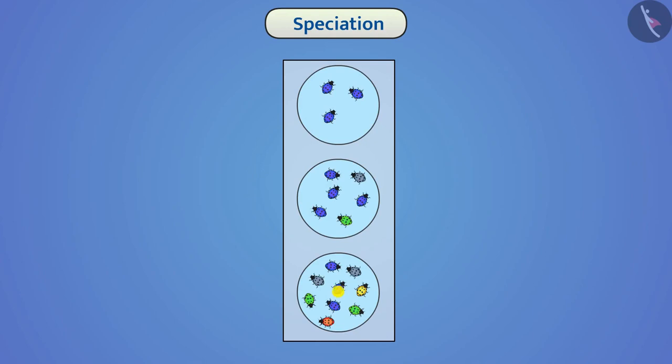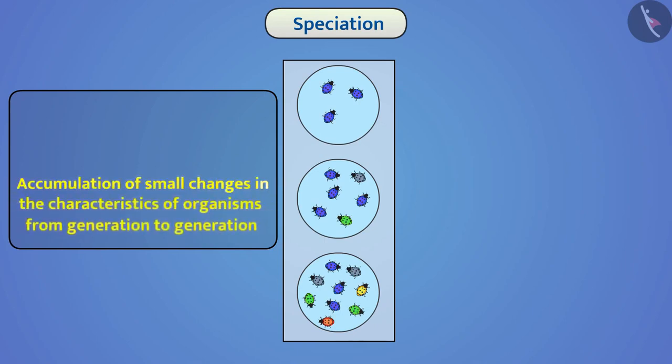Due to these variations, there are developments of certain characters in the organism which are different from that of parents. In this way, accumulation of small changes in the characteristics of organisms from generation to generation are called microevolution.